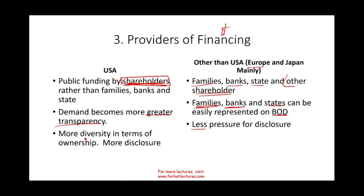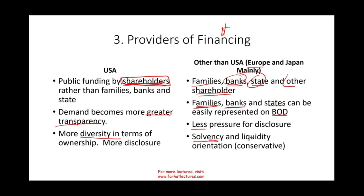There is more diversity in ownership in the US — many individual shareholders — versus countries like Japan and Europe where large corporations are still predominantly owned by families, banks, and the state. The way we do accounting depends on who the capital providers are. If capital providers are banks and the state, they are more interested in solvency and liquidity. In the US, since shareholders are looking for profit, accounting is more profit-oriented, providing information to help users judge profitability. Providers like banks and families tend toward more conservative accounting.